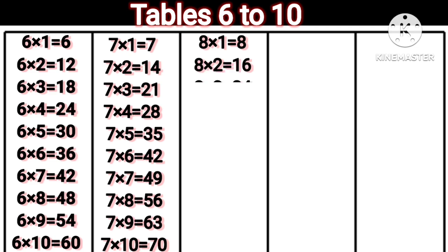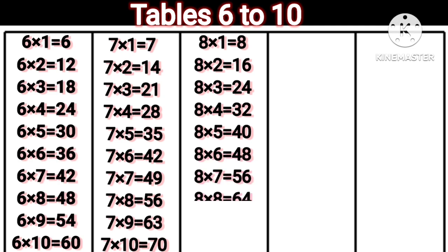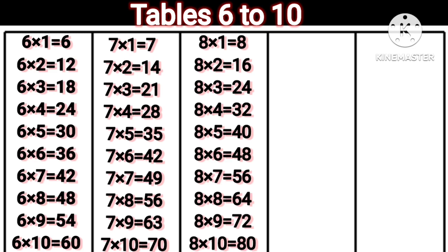8 1s are 8. 8 2s are 16. 8 3s are 24. 8 4s are 32. 8 5s are 40. 8 6s are 48. 8 7s are 56. 8 8s are 64. 8 9s are 72. 8 10s are 80.